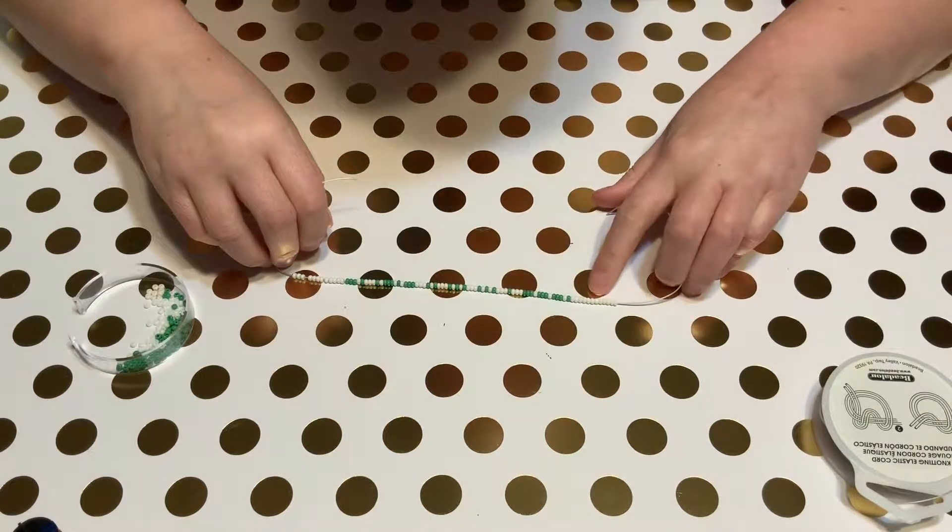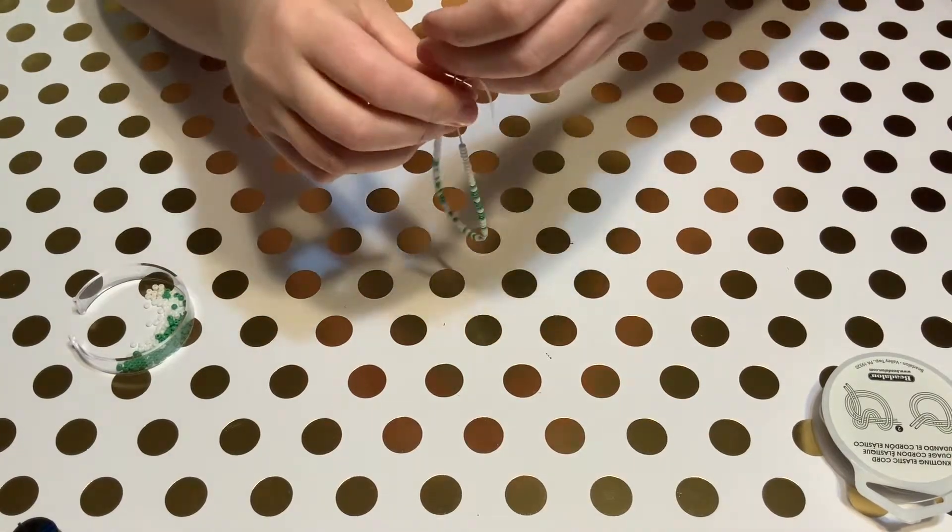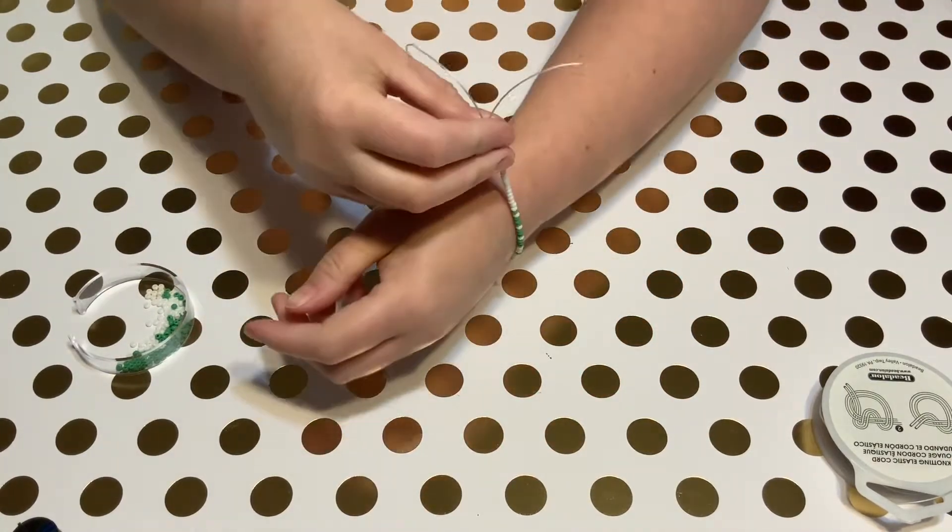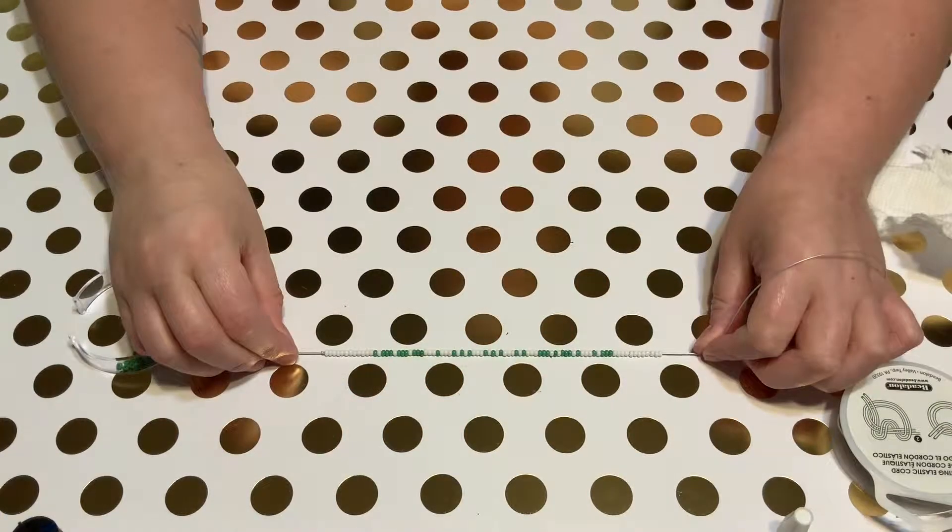So I added more white beads to both sides for a total of 12 white beads on each side of my name. And then I have my completed beading, spelling out my name, Jessica.